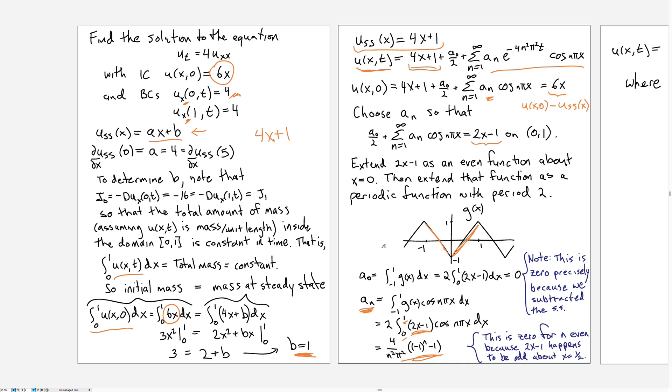And the a_0, so you'll notice I actually have a slightly unusual form here. I've written down the constant term as a_0 divided by 2. The only reason for doing that is it makes the formula for a_0 a little bit simpler. It looks exactly like the formula for a_n. Again, the 1 over 2 that would normally be out in front here has been built into the coefficient here.